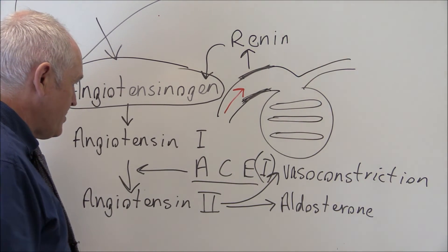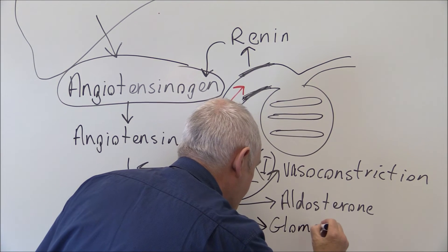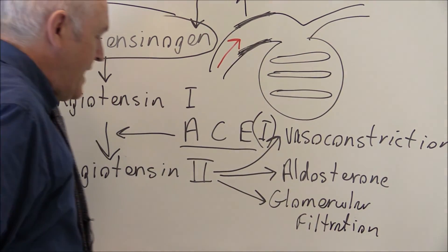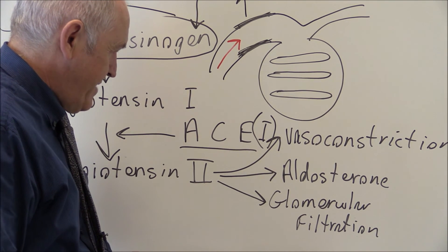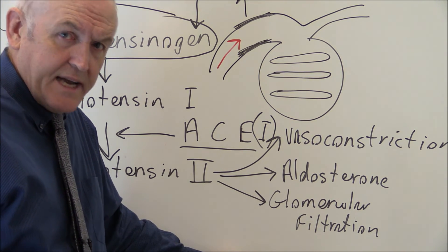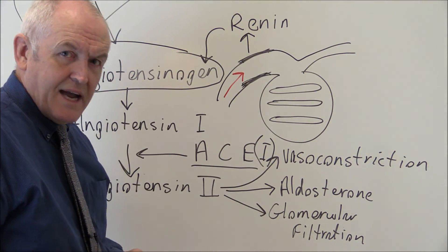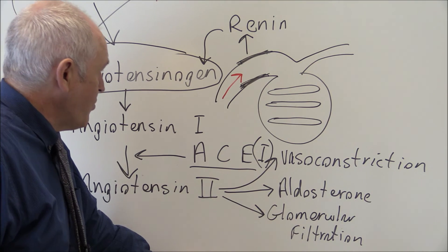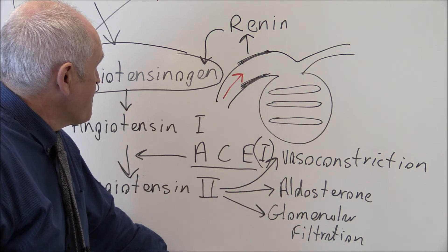Angiotensin type 2 will also affect glomerular filtration rate, and changes in glomerular filtration rate influence the amount of sodium and fluid retained in or excreted from the body. So we see that the kidney produces renin, which acts on angiotensinogen produced by the liver, and thereby the kidney is controlling vasoconstriction, aldosterone secretion, and glomerular filtration rate itself.